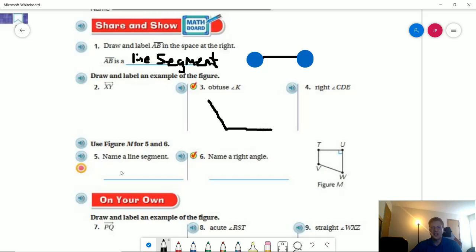Name a line segment. So a line segment, all four of these are line segments. So you just have to put one of those. And so I am going to choose to go from V to T. And then I draw my straight line over. If I were doing the right angle for number six, there is only one option there. And that would be the angle for you.